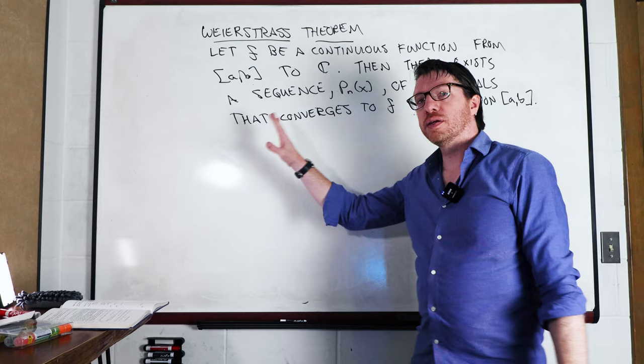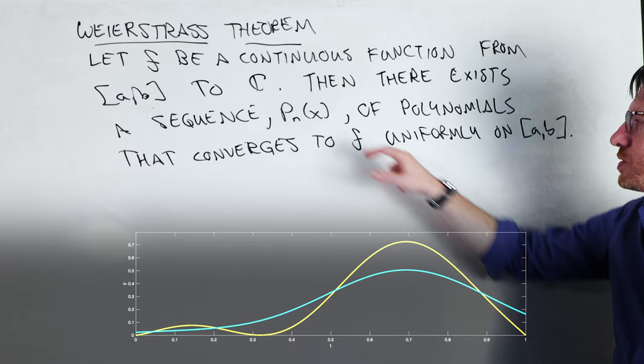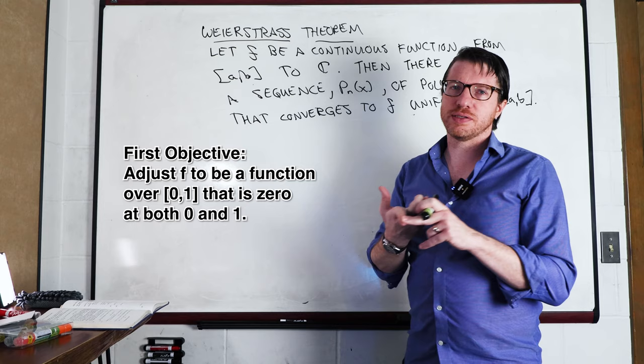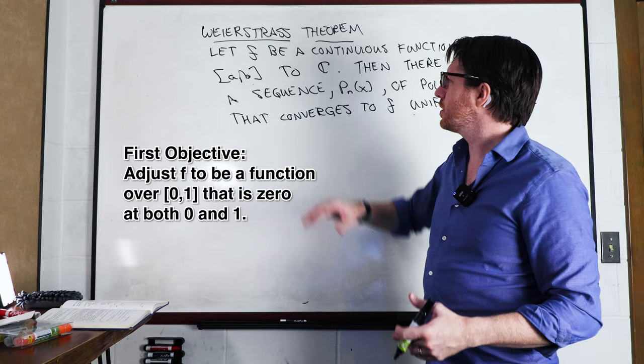This is the Weierstrass theorem. It basically says that if we have a function that is continuous over some closed interval [a, b] to the complex numbers, then there is a sequence of polynomials that converges to f uniformly on [a, b]. The first thing we're going to do, just to make life simpler, is reduce this to a function whose domain is [0, 1]. We'll get an approximation on the [0, 1] interval and then unwrap it into an approximation of f.